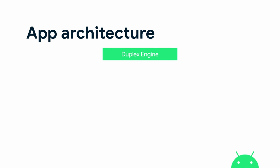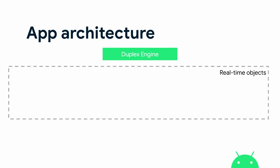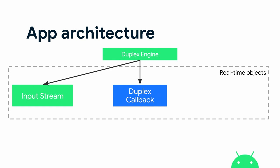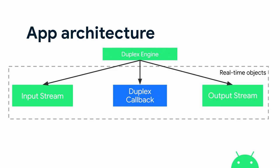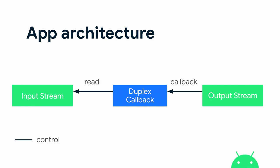Before we get into live coding, let me explain the architecture. We have an object called a duplex engine that's responsible for setting up the real-time objects used whilst the app is doing its processing. These are: the input stream, a duplex callback — an object called each time the output stream requires more data — and then we read from the input stream, do the processing inside the callback, and pass the processed data to the output stream.